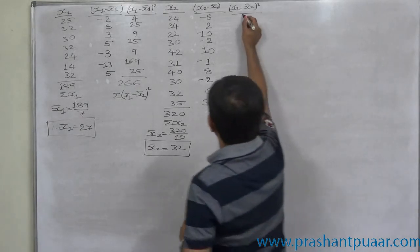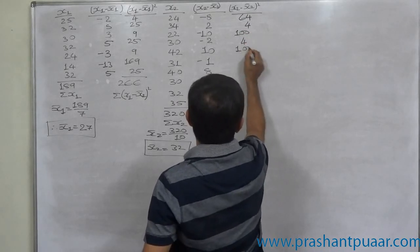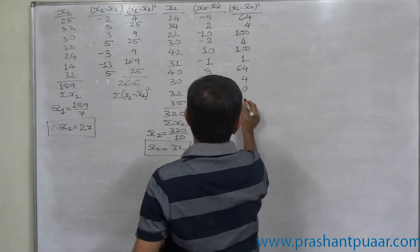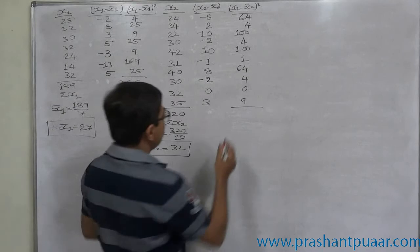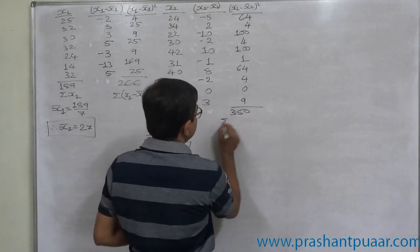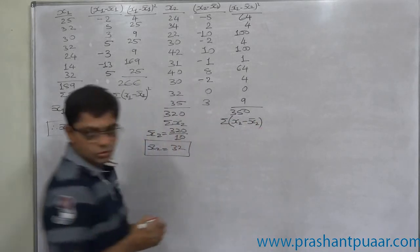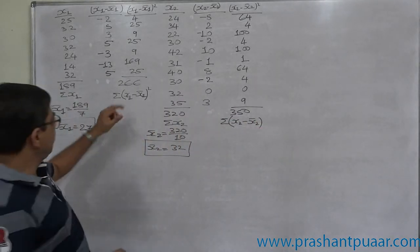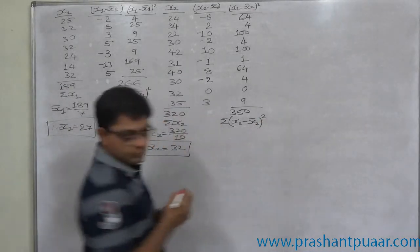Now, squared values: 64, 4, 100, 4, 100, 1, 64, 4, 0, and 9, giving 350. This is Σ(x₂ - x̄₂)². Now we have Σ(x₁ - x̄₁)² and Σ(x₂ - x̄₂)².